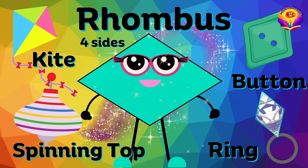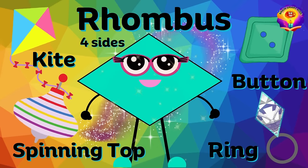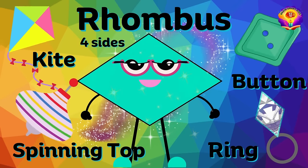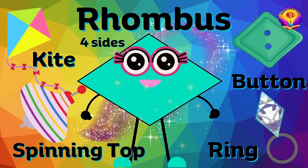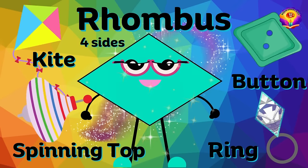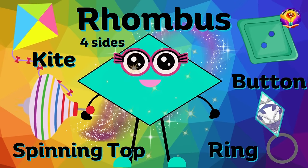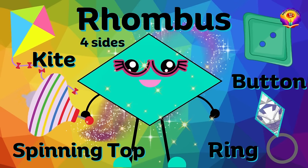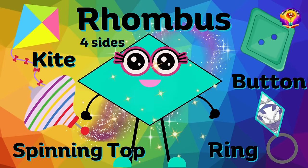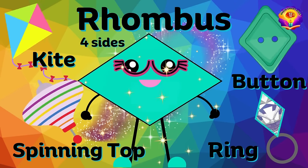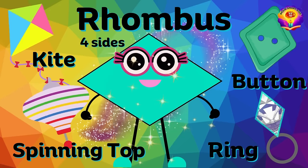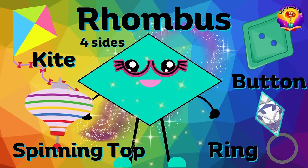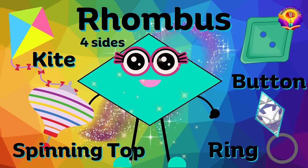Rhombus. R-H-O-M-B-U-S. Rhombus. A rhombus has four sides. Kite, spinning top, ring, button. Rhombus.